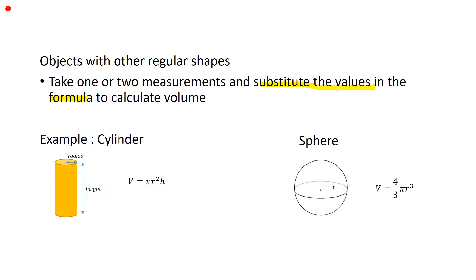For example, for this cylinder, we can measure the radius and the height to obtain the values of these two variables, and we substitute into the formula V equals pi r squared h. We substitute the radius into r and the height into h. The same goes for the sphere — we can measure the radius and substitute it into the formula given.